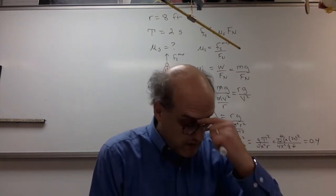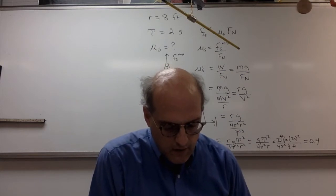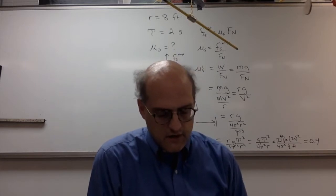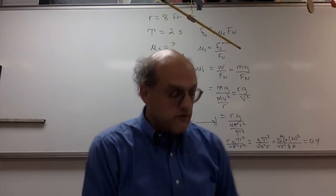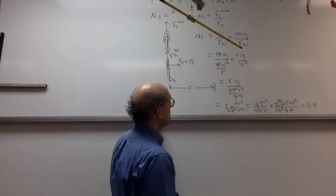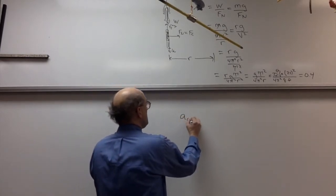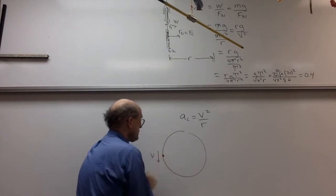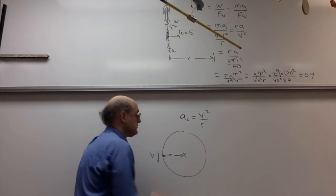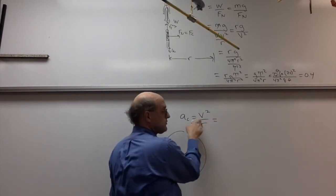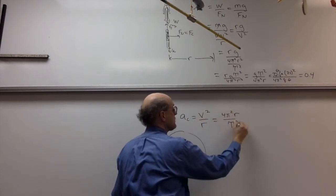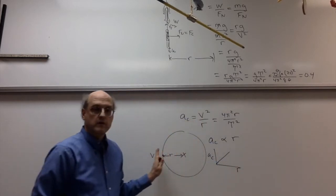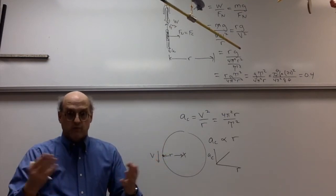Number two: we have a merry-go-round. They want to know how the center-directed acceleration varies with the distance to the center. The centripetal acceleration equals v²/r. Rewriting speed as 2πr/T, we get centripetal acceleration = 4π²r/T². This tells us the centripetal acceleration varies directly with the radius. The period is constant because any horse takes the same time to go around once.